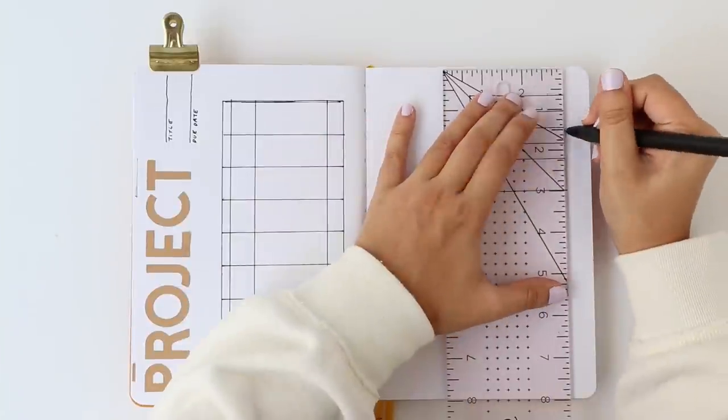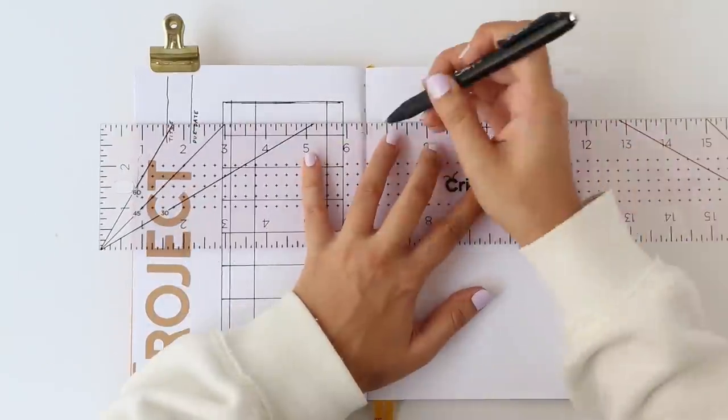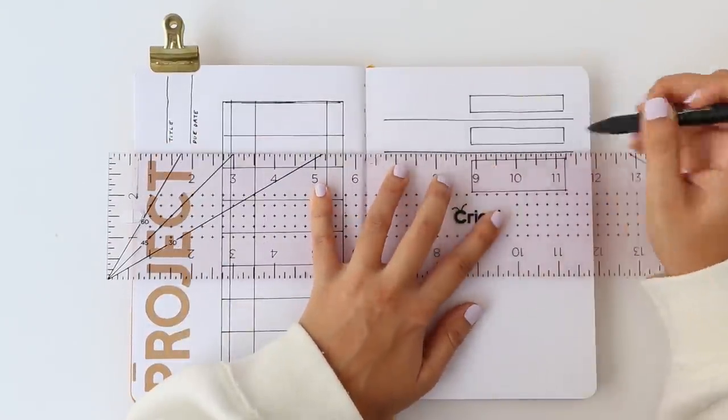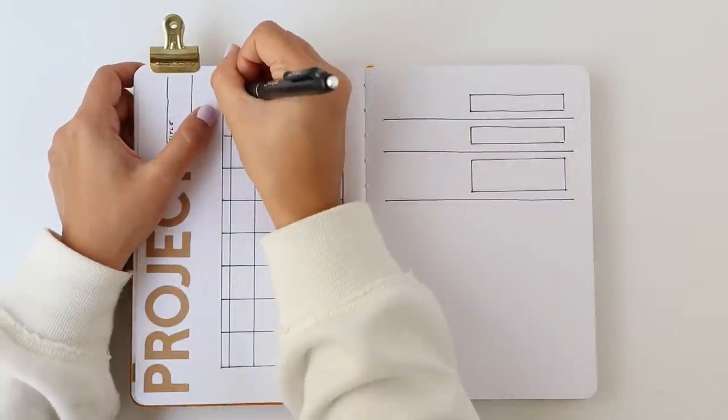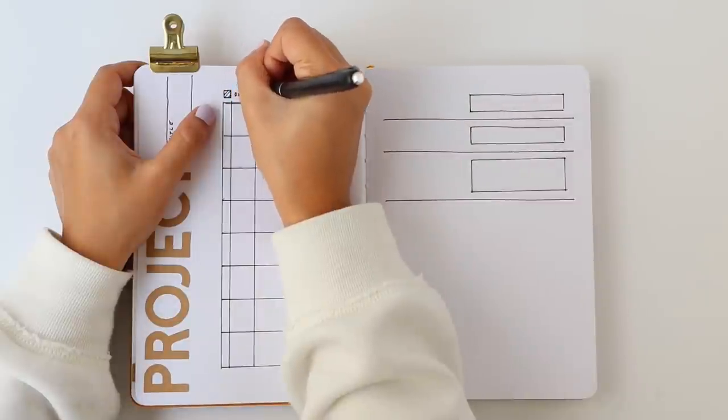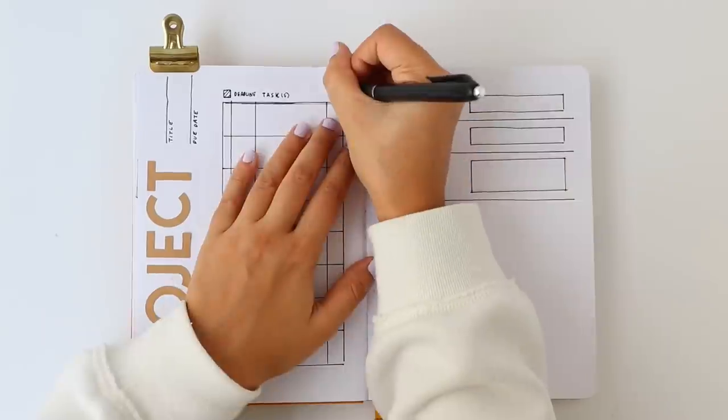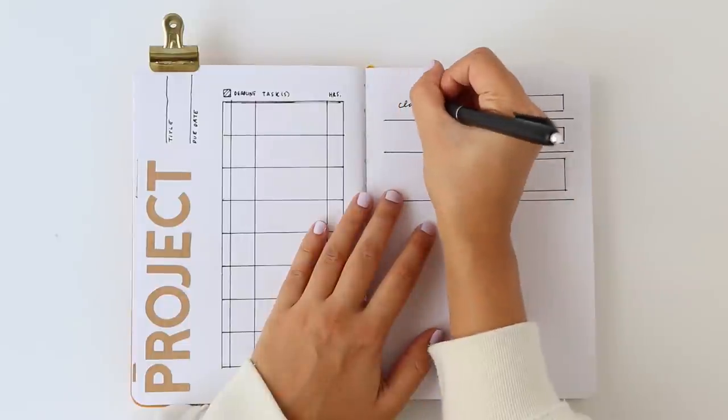There's also a column on the far left to mark when you complete a deadline and the column on the right page is a spot to record how many hours you spent on that task, which can be great information to keep track of and give to your manager and or just for your own personal understanding of how long tasks take you so you know how to even better manage your time in the future.